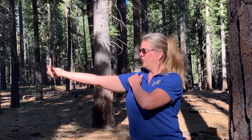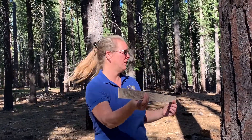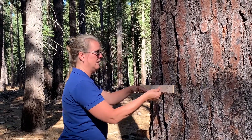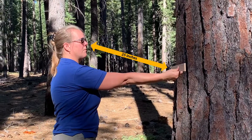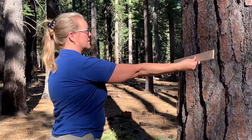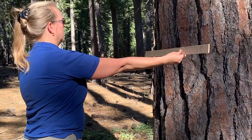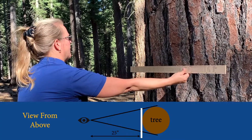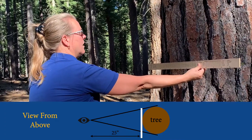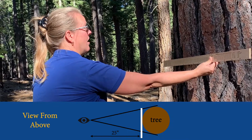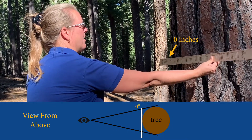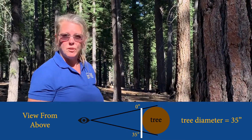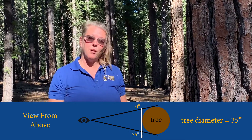To use it, remember where 25 inches from your eye is. Come up to your tree, find four and a half feet off the ground — breast height — and hold the stick 25 inches from your eye. Put the left side or zero marker flush with the left edge of the tree, holding it as flat as you can against the bark without moving your head. On the left side I see zero, and on the right side, without moving my head, I see about 35 — pretty close to what we got with the d-tape.